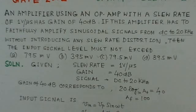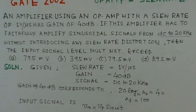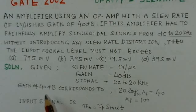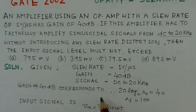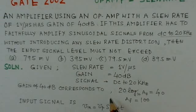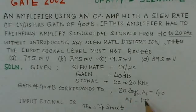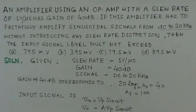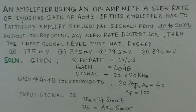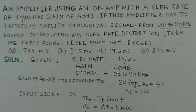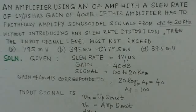We start by converting the gain from 40 dB to a ratio. The relation is 20·log₁₀(AF) = 40, which gives AF = 100. So the voltage gain in terms of ratio is 100.